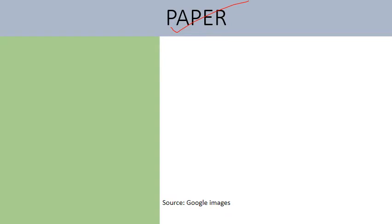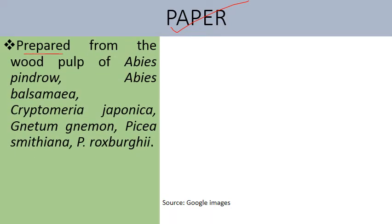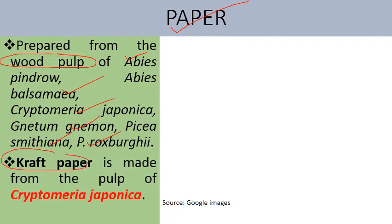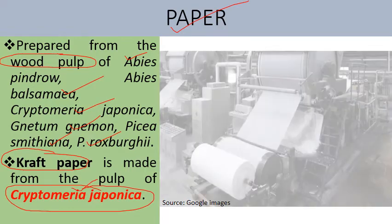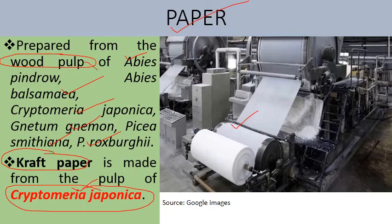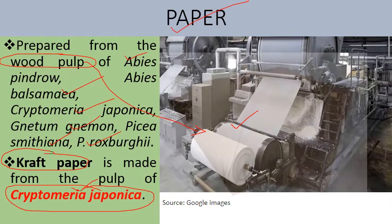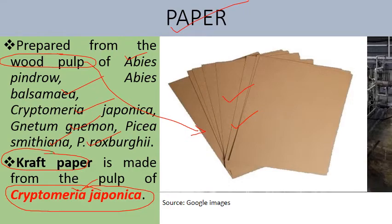Gymnosperms are a good source of paper. The wood pulp of gymnosperms is used for the preparation of paper, from species including Abies pindro, Abies balsamea, Cryptomeria japonica, Gnetum gnemon, Picea samithiana, and Pinus roxburgii. Craft paper in particular is made from the pulp of Cryptomeria japonica.